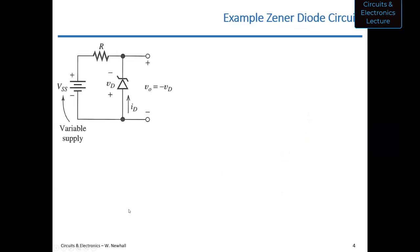Let's look at a typical zener diode circuit with a resistor and a zener diode in series. Imagine you have a voltage source that varies. We'll look at what happens to the output voltage Vo with this resistor and zener diode in series. Note that the zener diode is intentionally reverse biased when Vss is positive.